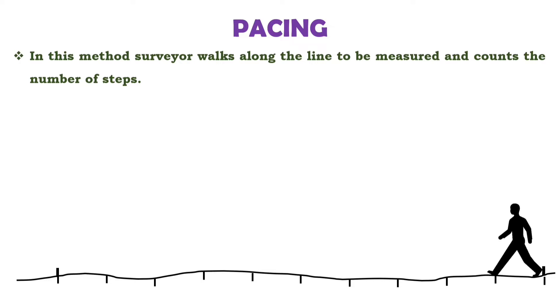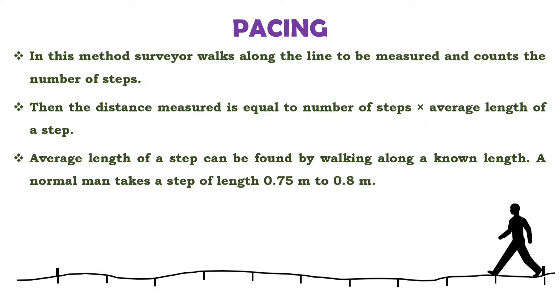The first method, that is pacing. In this method, surveyor walks along the line to be measured and counts the number of steps. Here you can see one person is walking. If the distance between these two points are to be measured, the number of steps will be counted by the person. The distance measured is equal to number of steps times average length of one step. Average length of one step can be obtained by walking along a known distance. Normally, a man takes step of length 0.75 meter to 0.8 meter.